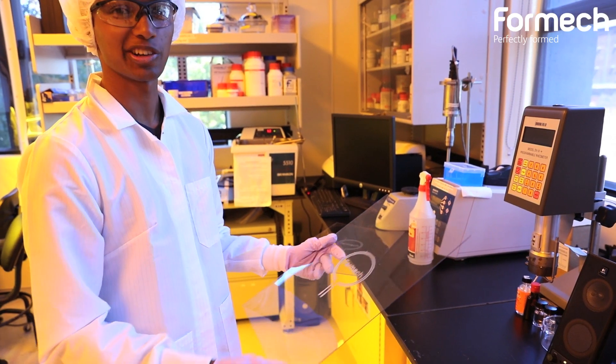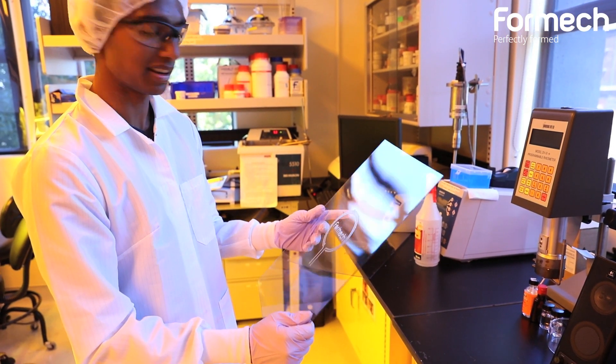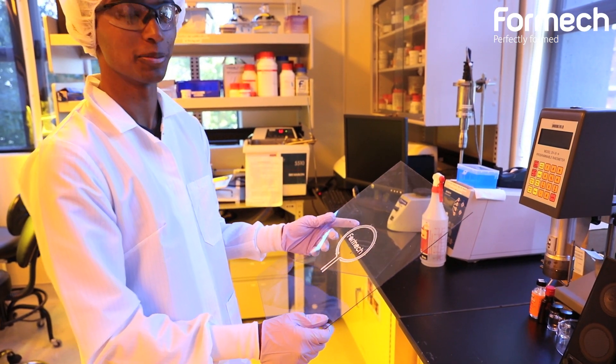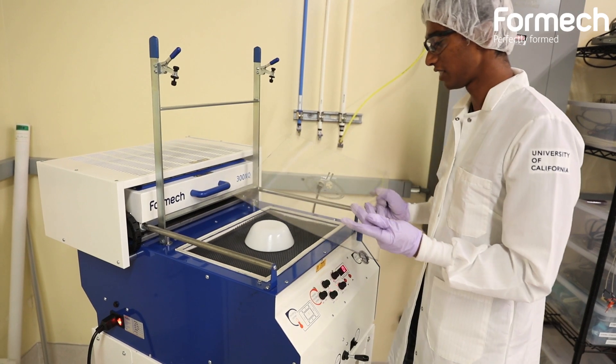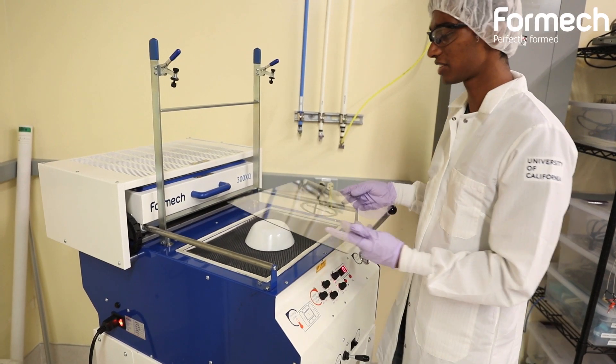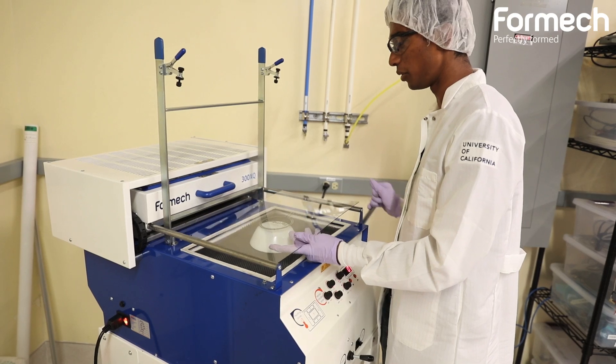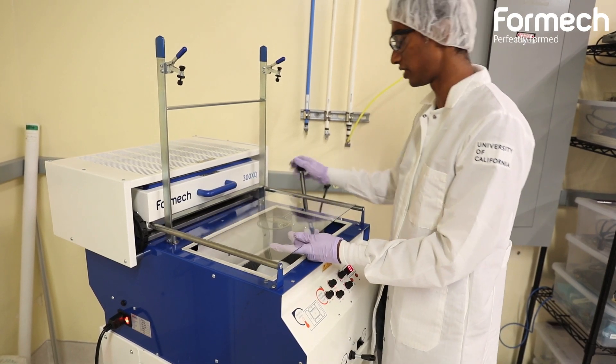So I finished coating the samples with conductive ink, and now we're going to take them over to the vacuum former. I've got my sheet here, and our mold is this bowl-shaped object, and I just want to align the mold to the printed object.